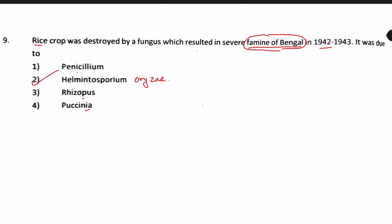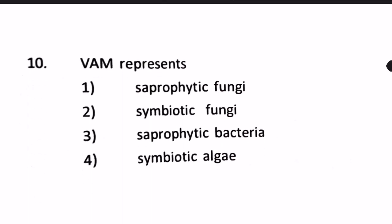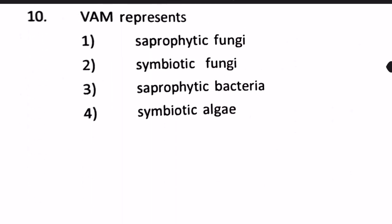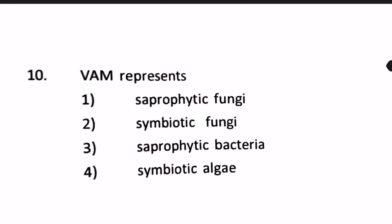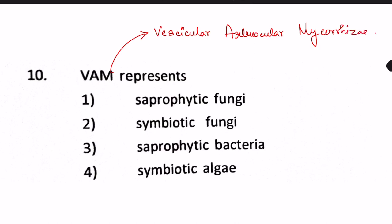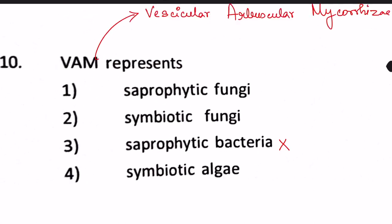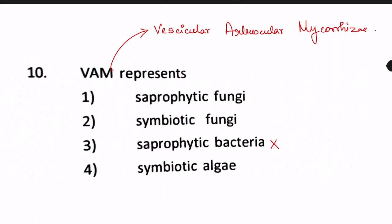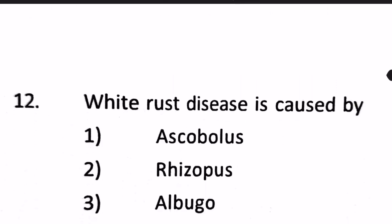Next question: VAM represents Vesicular Arbuscular Mycorrhizae. This is a relationship involving a fungus, not a bacteria, so option C (bacteria) is wrong. VAM is a symbiotic relationship, so the answer is symbiotic fungi — option two is correct.